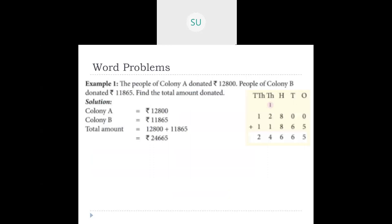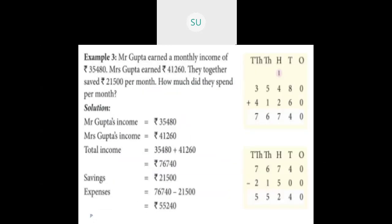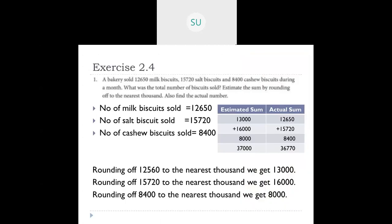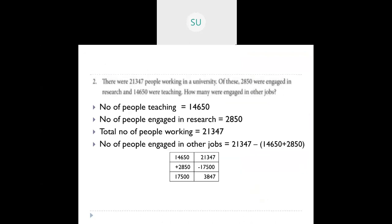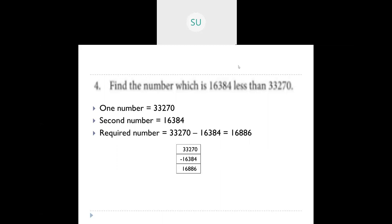Then we saw word problems. Word problems give you a story with various numbers and ask you to find a solution. For example: people of Colony A donated 12,800 rupees and Colony B donated 11,865 rupees — find the total amount donated. Since you need the total, you add both amounts to get the answer. We solved many such examples and also completed Exercise 2.4 from the textbook.